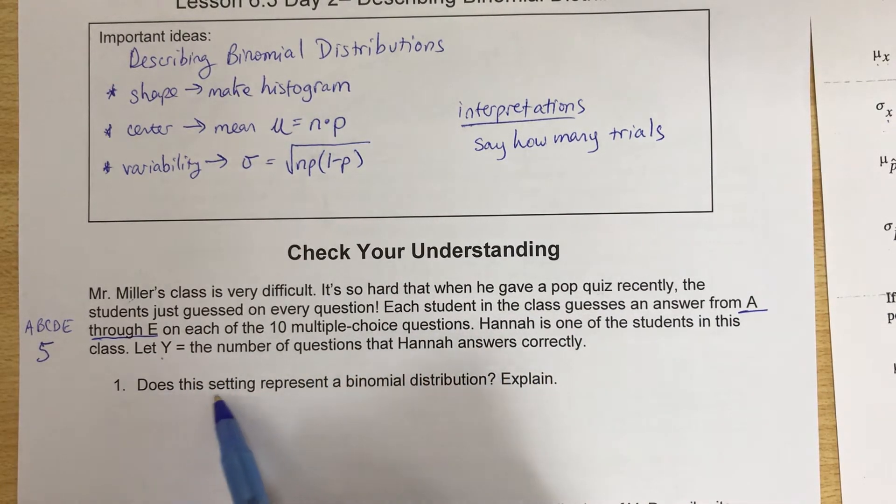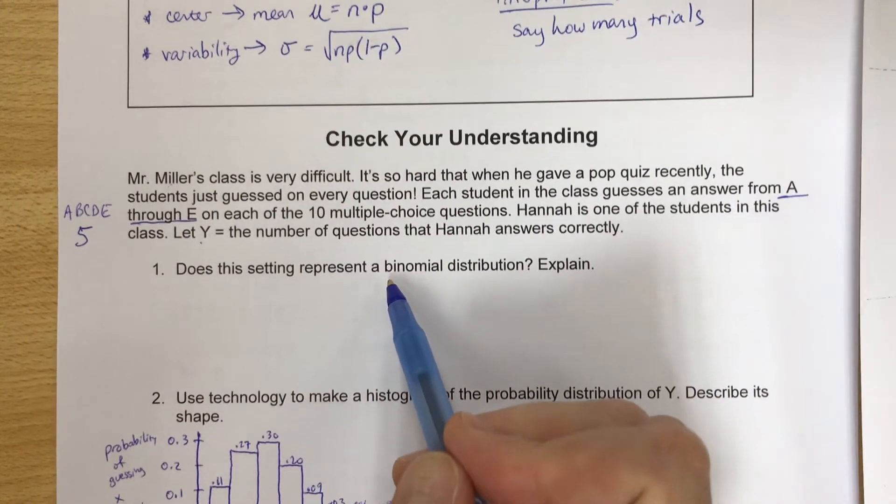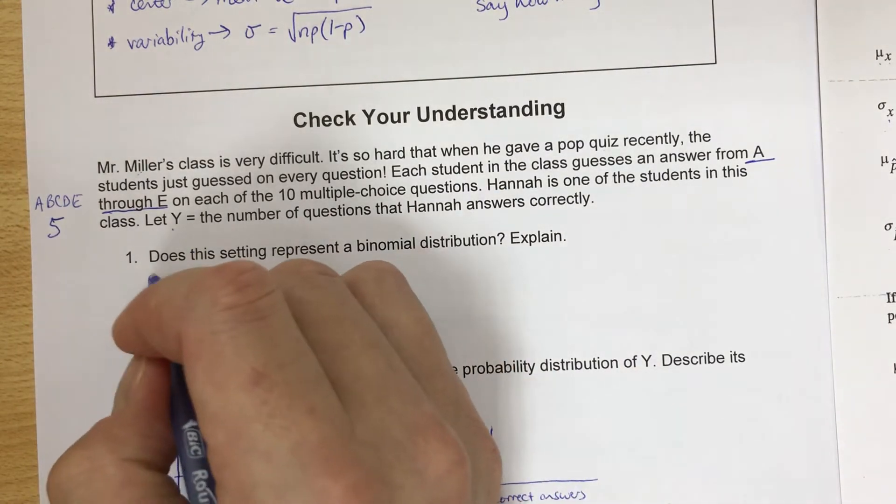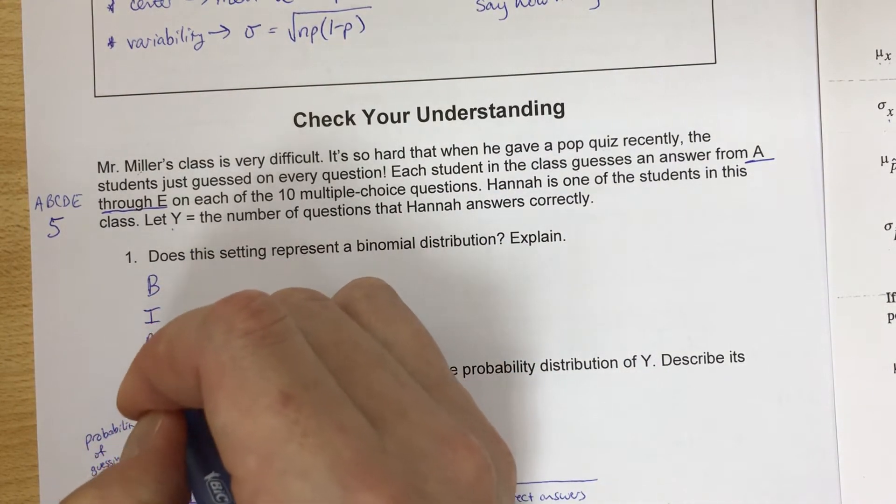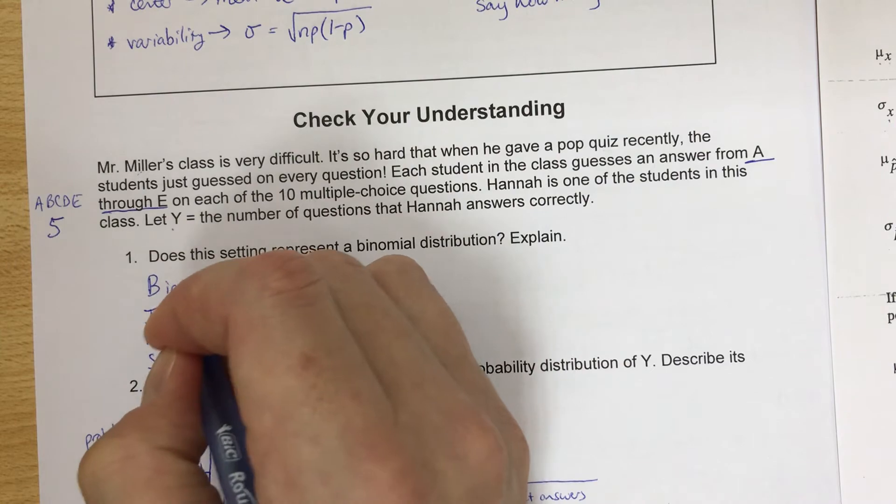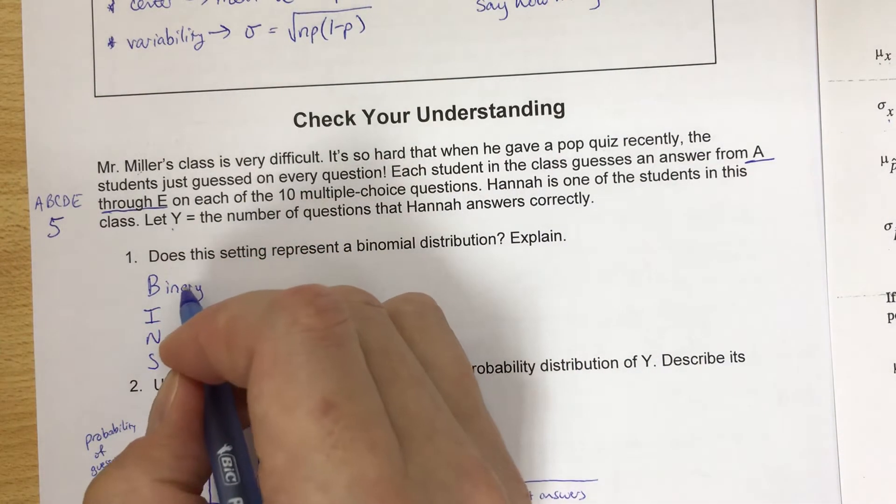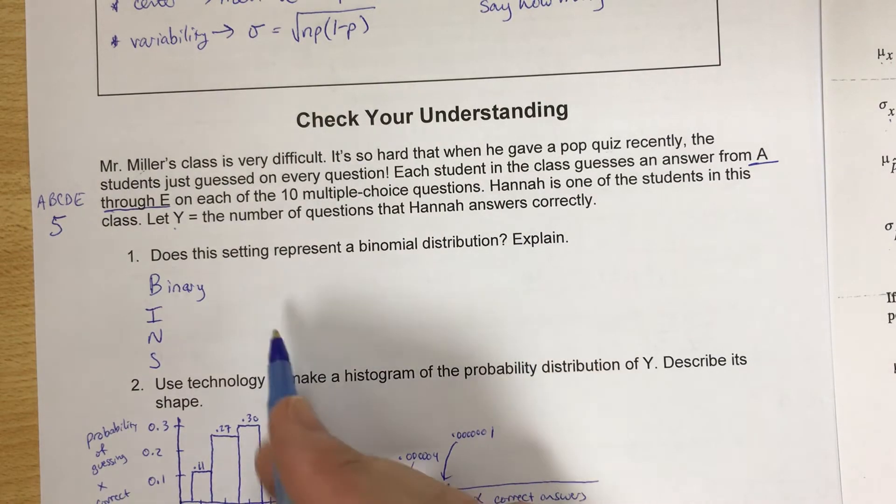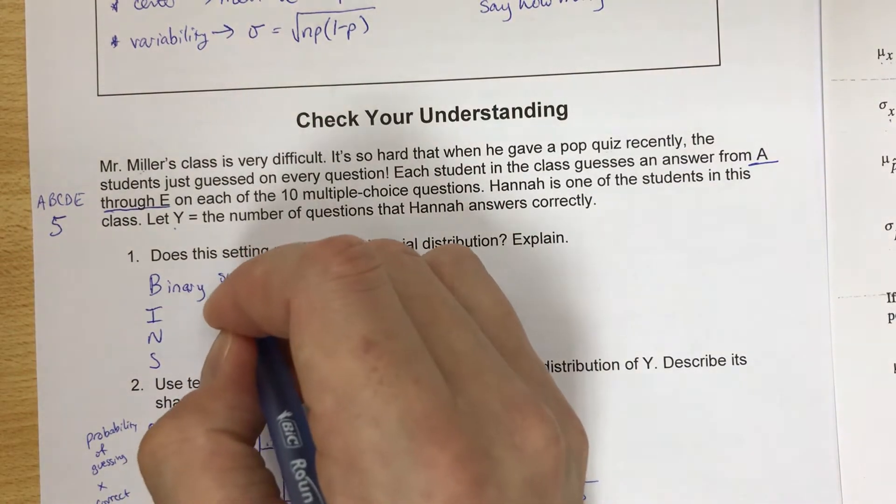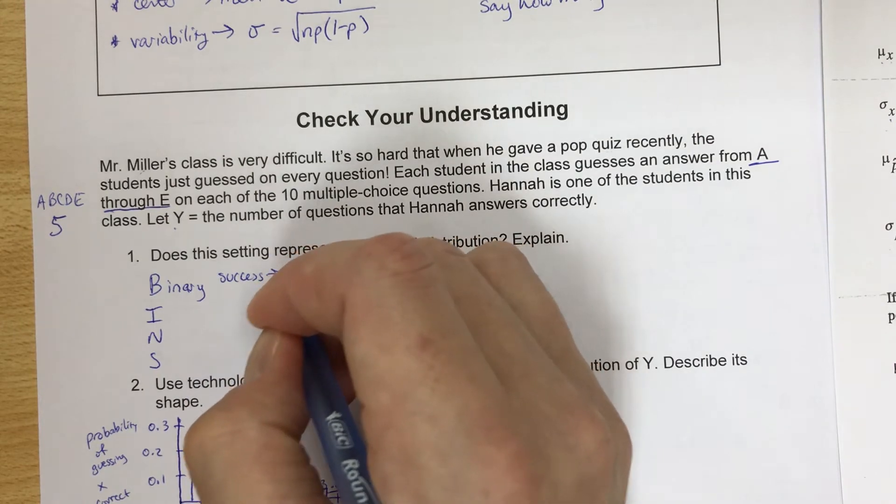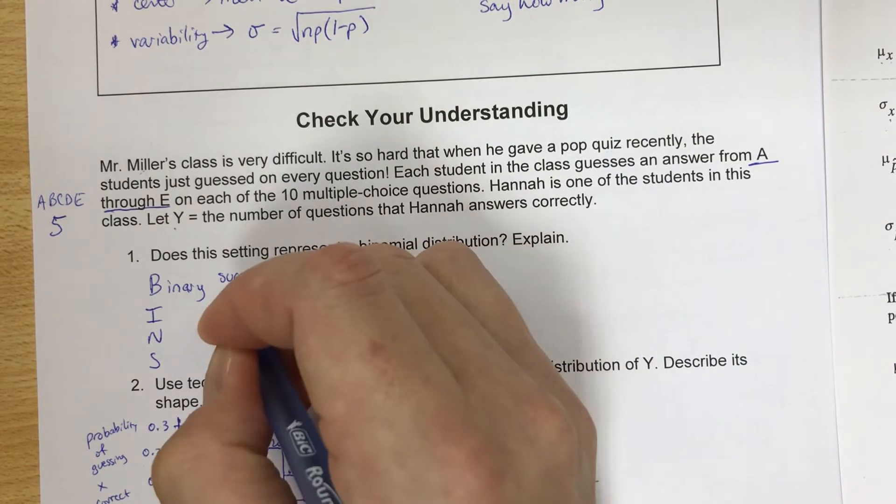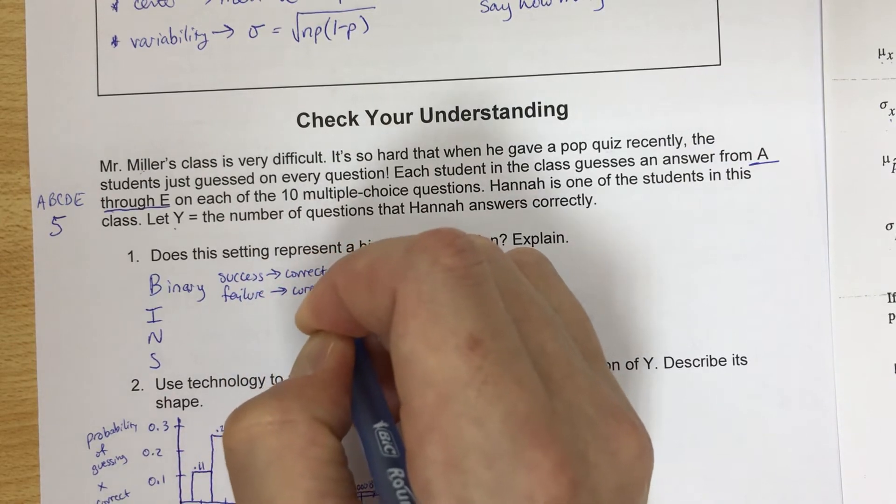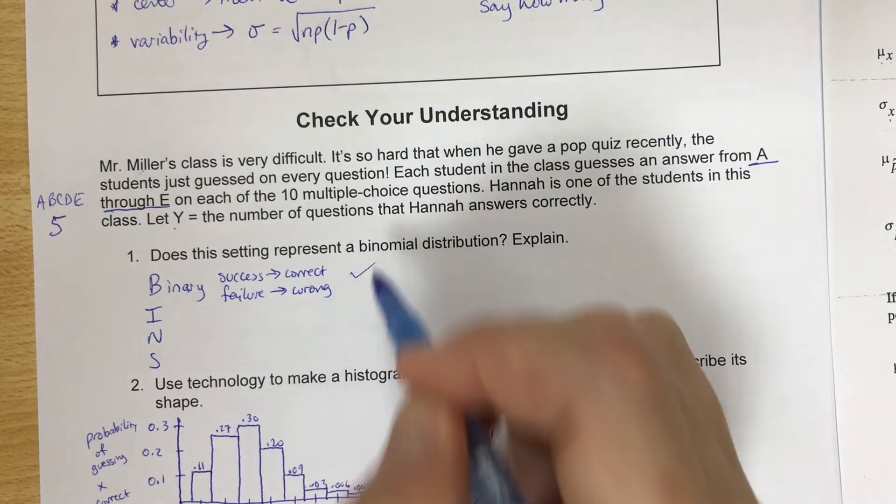Does this setting represent a binomial distribution? Explain. We're going to check the bins. First of all, is it binary? Are there two possibilities each time for each trial? The answer is yes, we can get success, that would be a correct question, or failure is an incorrect or wrong question. So binary? Yes.